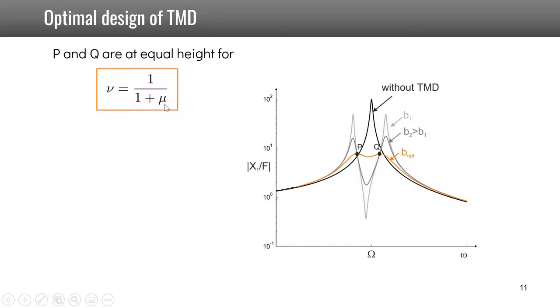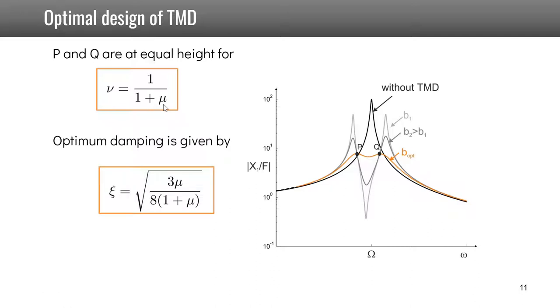He also found the optimum damping, which is given by xi equals square root of 3 mu divided by 8 times 1 plus mu. So it is also a function of the mass ratio, and once you have xi, you can find optimum B given by the following expression.